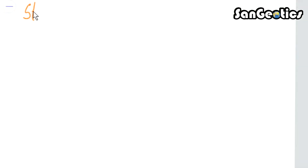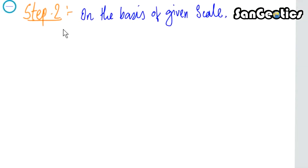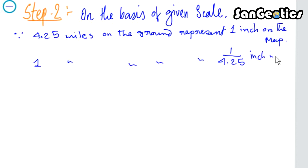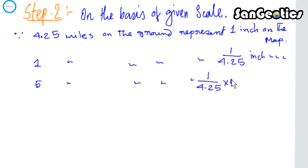Step 2: on the basis of the given scale, 4.25 miles on the ground represent one inch on the map. Therefore, one mile on the ground represents 1/4.25 inches on the map, and five miles on the ground represent (1/4.25) × 5.